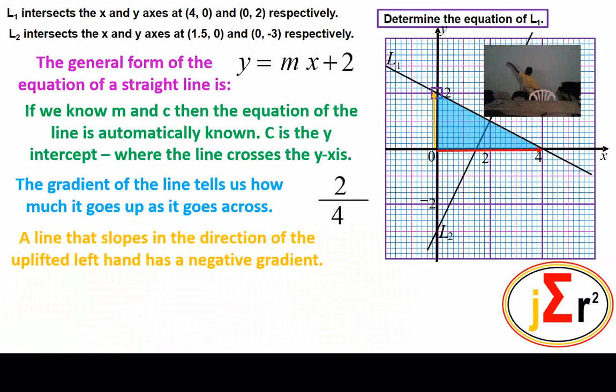A line that slopes in the direction of the uplifted left hand has a negative gradient, like we have George Overson right there showing the uplifted left hand, for the negative gradient.